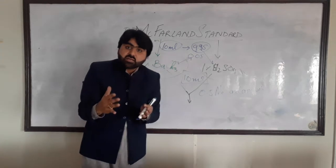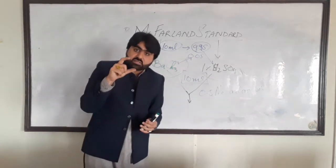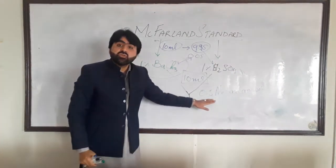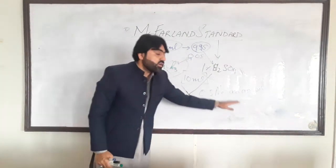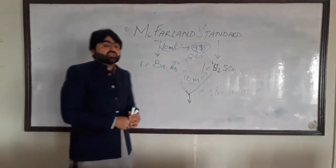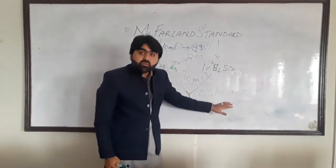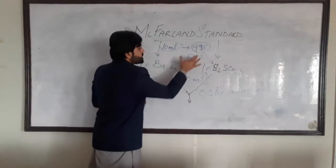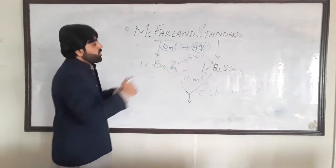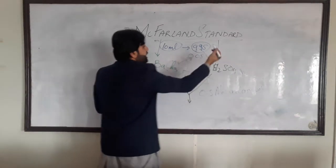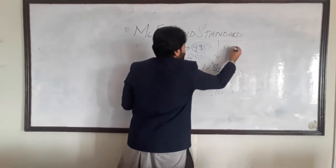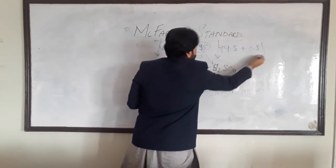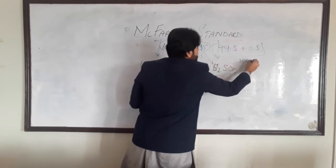As turbidity increases, it results in an increase in cell density. The recommended range used in clinical bacteriology is the 0.5 McFarland solution. To prepare 0.5 McFarland solution, you add the two solutions in this proportion for 10 ml, or if you want 100 ml, then you use 99.5 ml of sulfuric acid plus 0.5 ml of barium chloride.